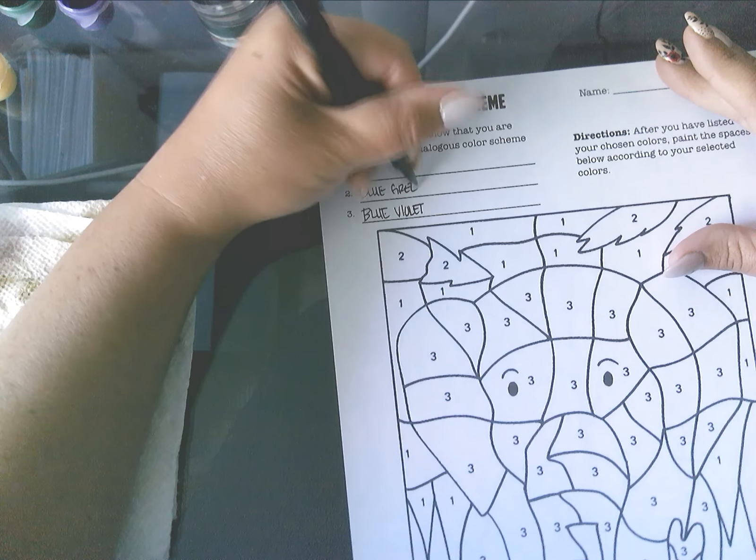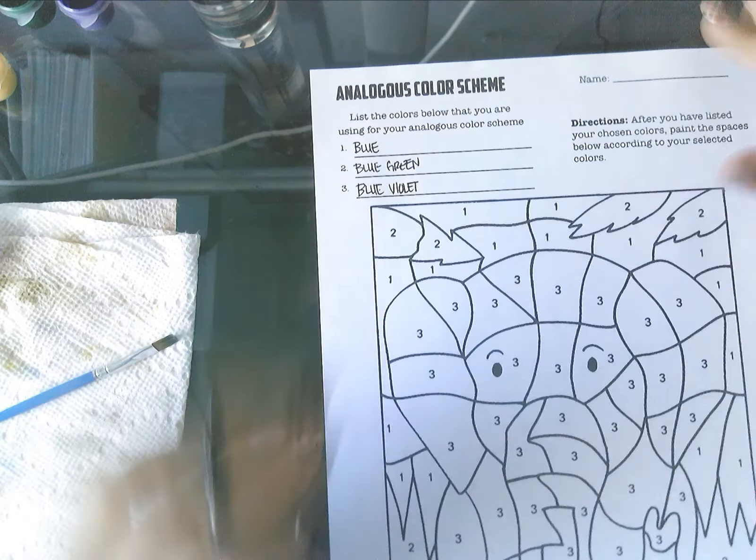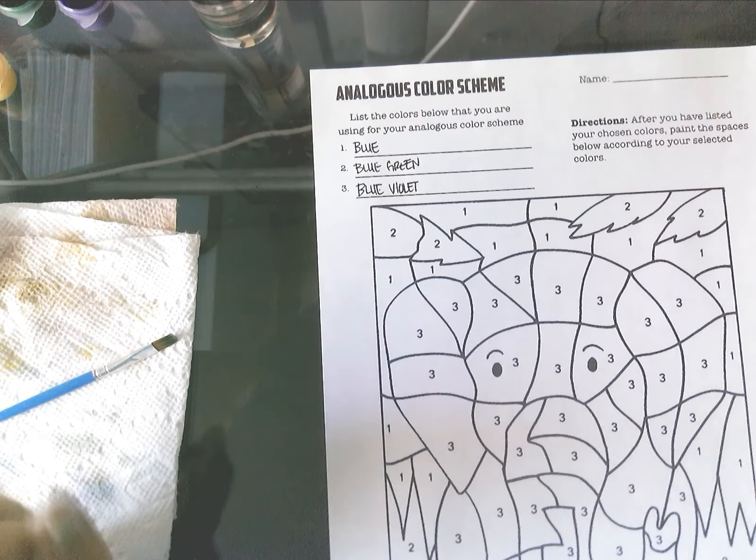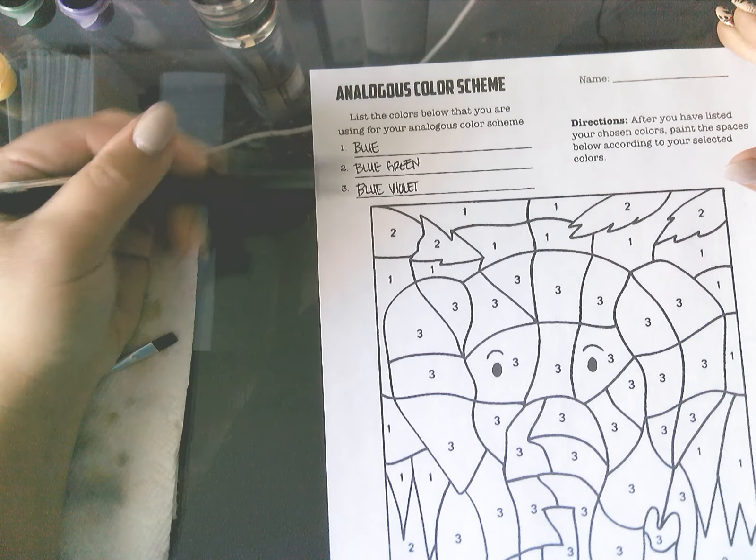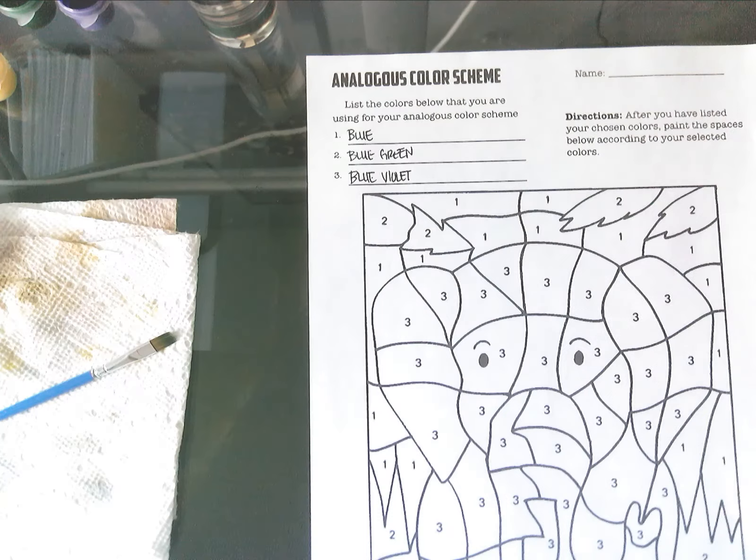And then my last choice is blue. Now, again, you can do this in any, as long as there are three colors next to each other. That doesn't mean that they have to be listed in that exact order. Just three colors next to each other on the color wheel. So I have done that.